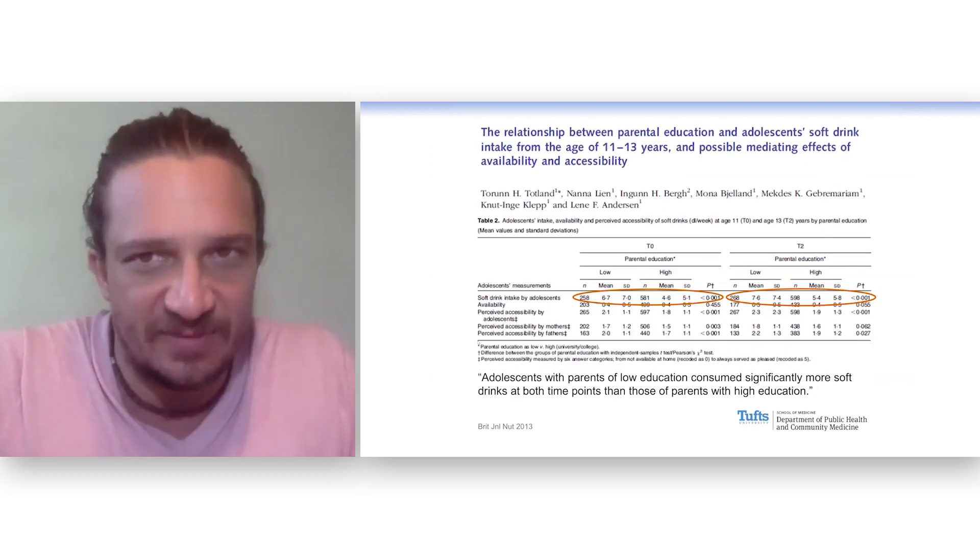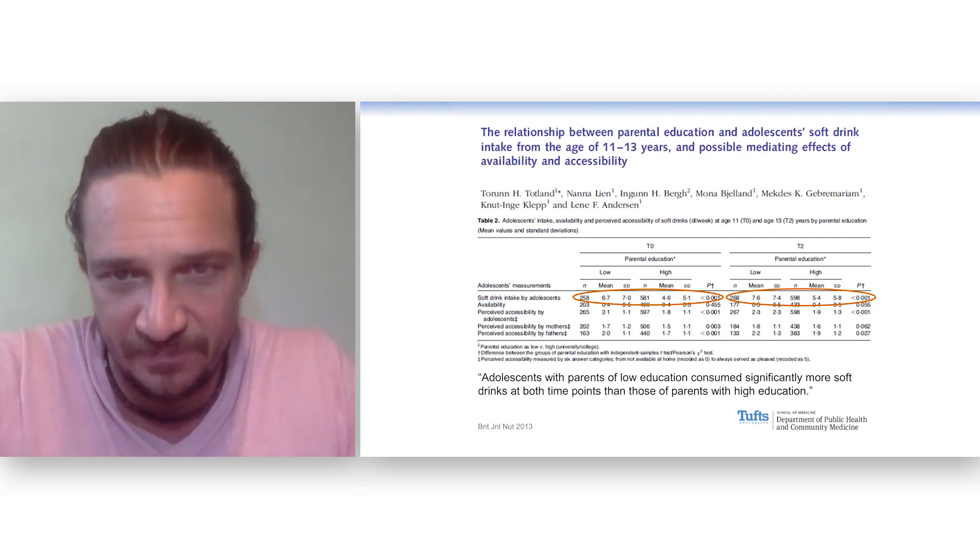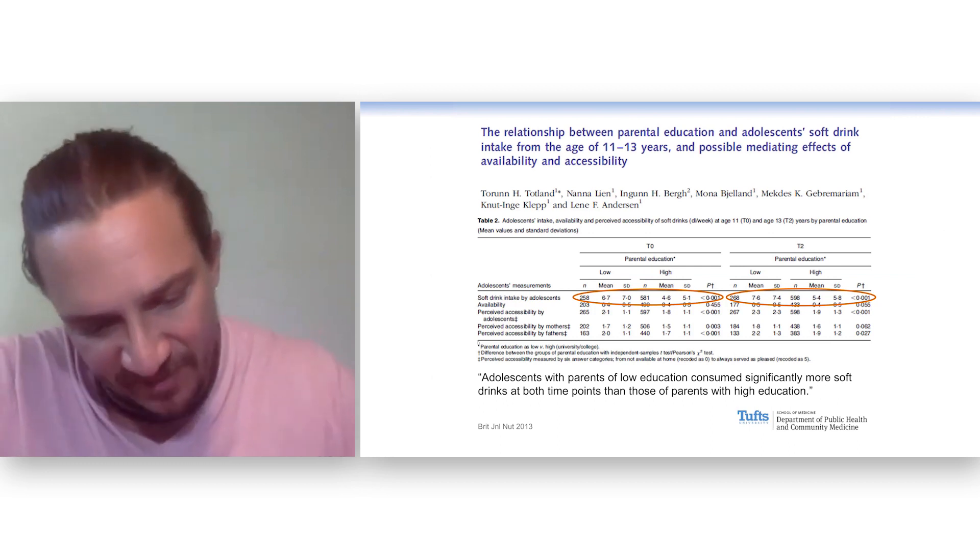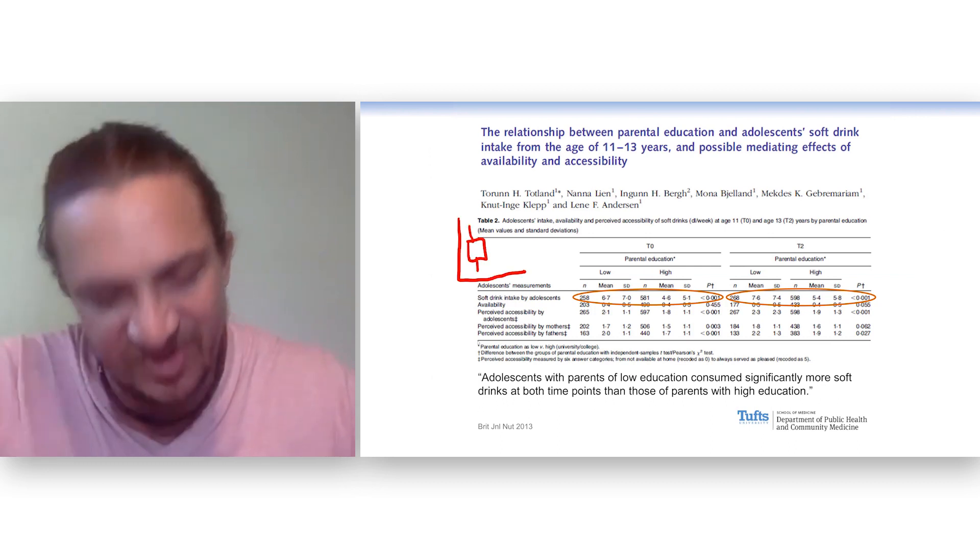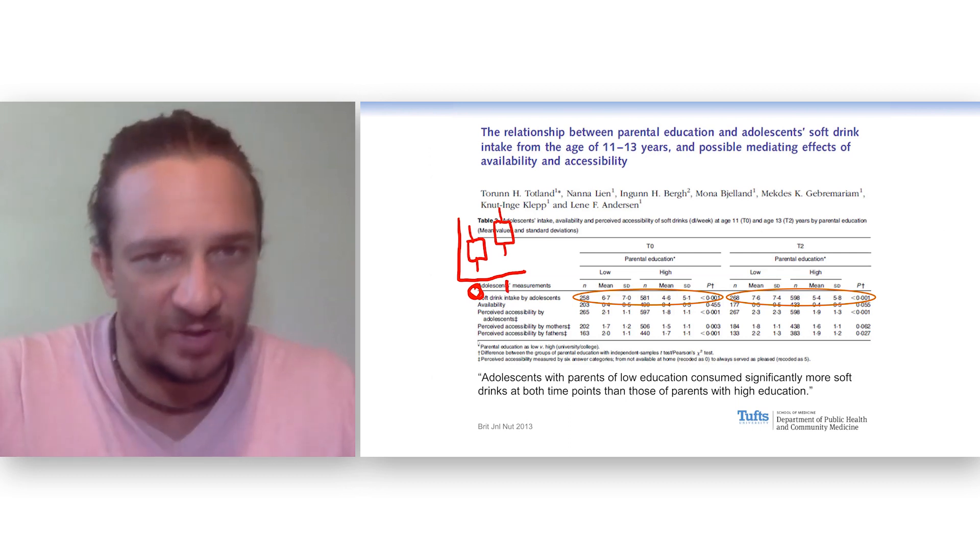I want to show you a couple examples from the literature. Here are some data on the relationship between parental education and kids' soft drink consumption. This is a great example of an independent samples T-test. We have the continuous variable that we're going to compare the means between each group. We have one group here, one group here, and then we compare the means.